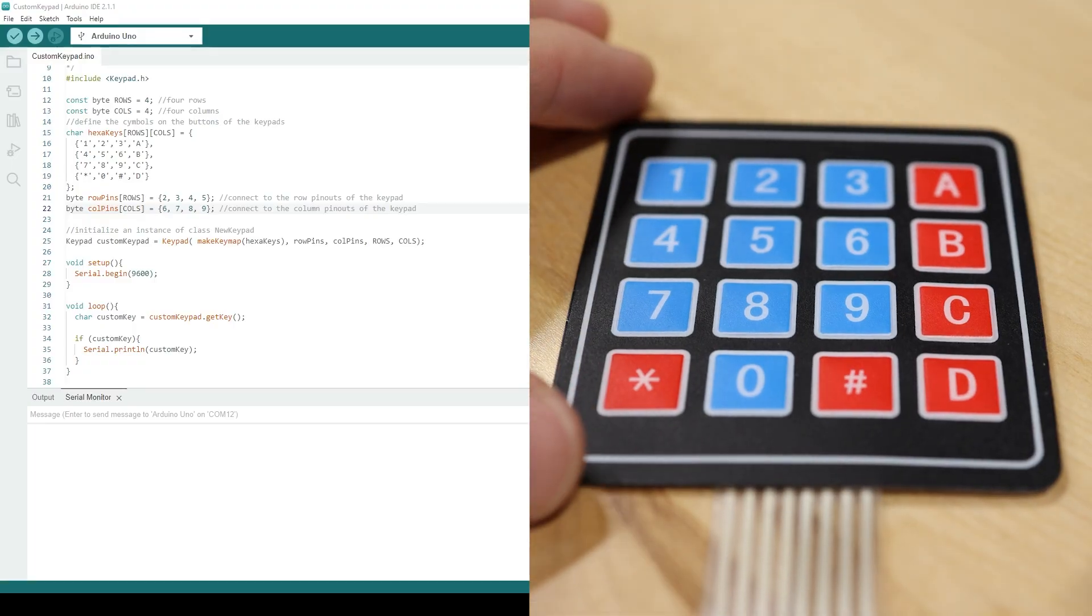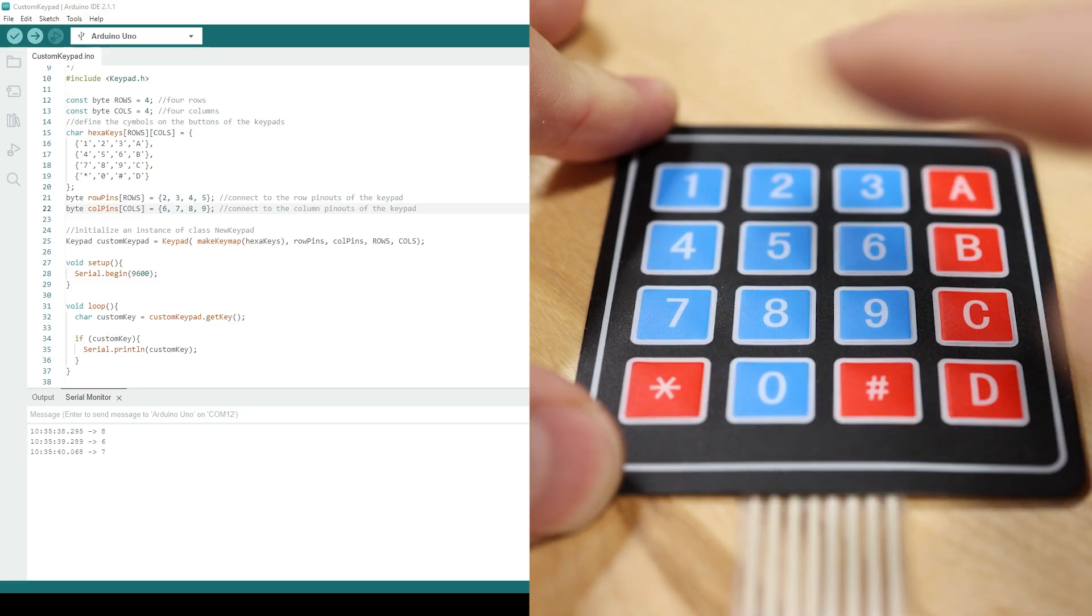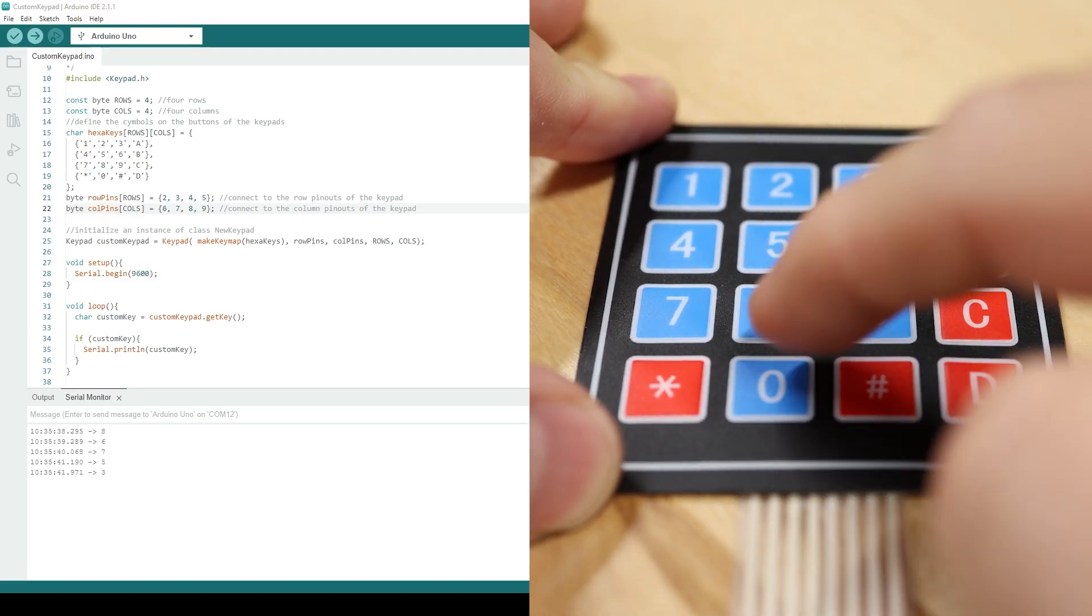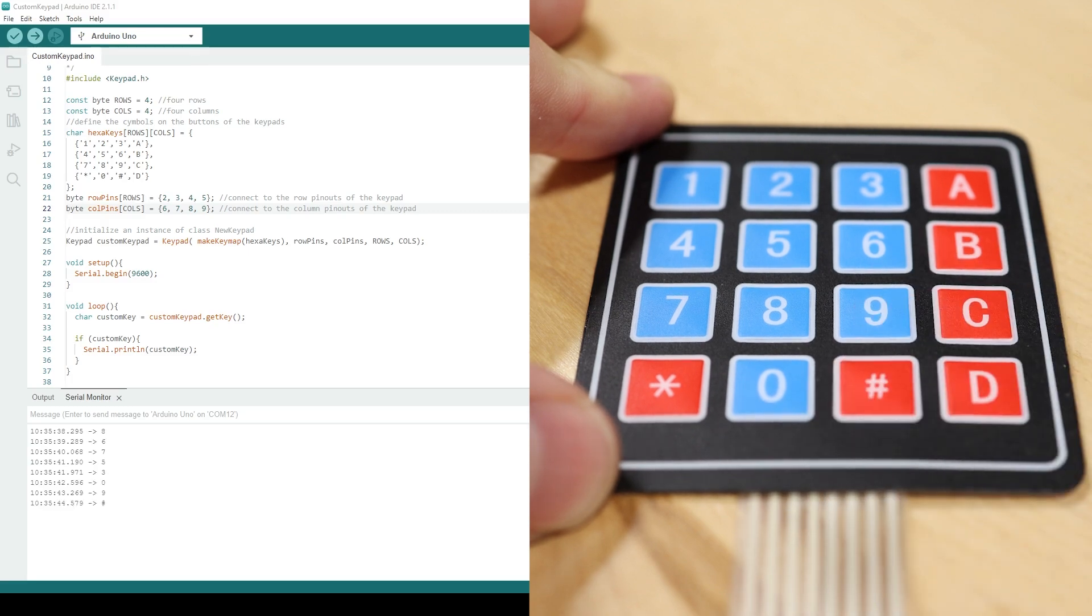With a little bit of additional code, you can prevent a single button press being read as multiple button presses. By using this sort of sequence, you can read matrix keypads with quite a bit of precision.